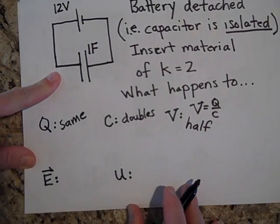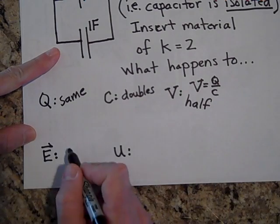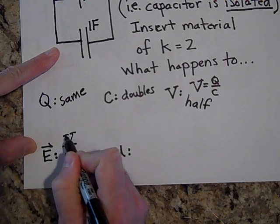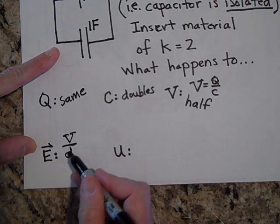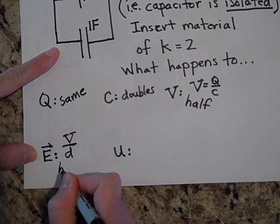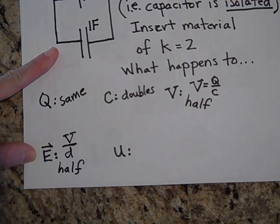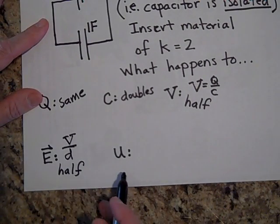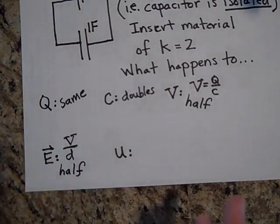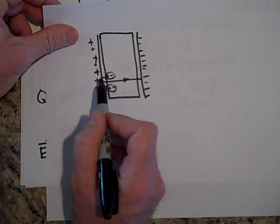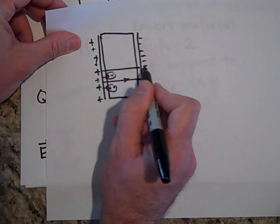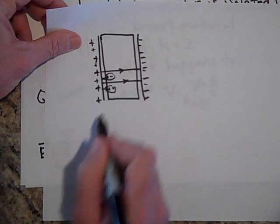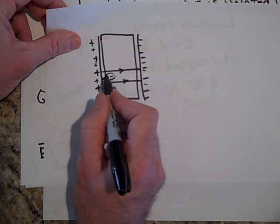Since the electric field is voltage divided by the distance between the plates, and the voltage is halved, the electric field is also halved. The reason is that some of those field lines are ending at the molecules of the dielectric — some go all the way through but some stop at the polarized molecules, as shown in your book.